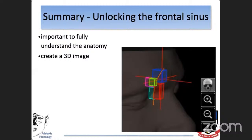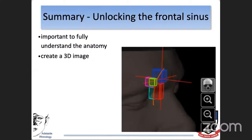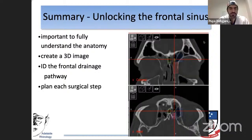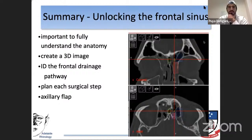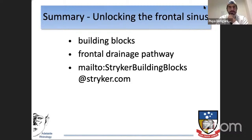In summary, unlocking the frontal sinus is vital. It is important to fully understand the anatomy and create that 3D image — which requires having all the building blocks in place so you know where the cells are, how they sit together, and how those cells relate to the frontal sinus drainage pathway. Identifying that pathway is critical to surgical planning and predicting each step, so that surgery is always completely controlled and understood throughout the procedure, allowing a complete dissection with reduced risk. The software is provided free of charge by Stryker — visit the address on the slide for a free annual subscription.